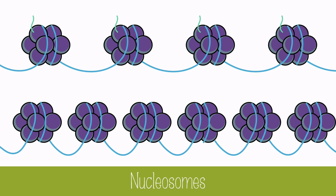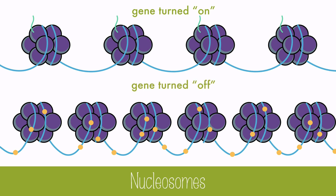Additionally, methylated cytosine will tighten the nucleosomes, while unmethylated cytosine will loosen them. So active, open chromatin and unmethylated cytosine along with acetylated histones will activate a gene and turn it on. Silent condensed chromatin and methylated cytosine along with deacetylated histones inactivate a gene and turn it off.